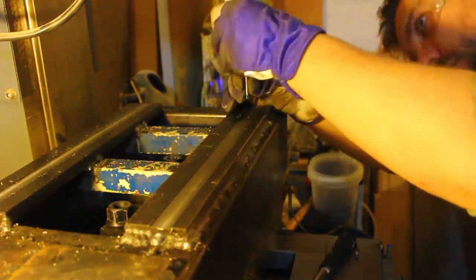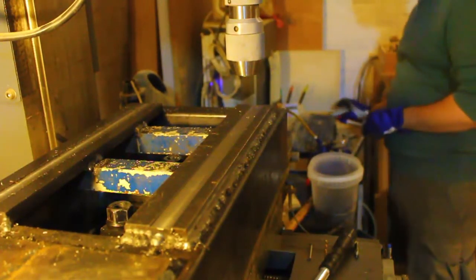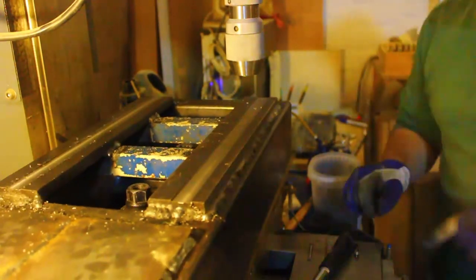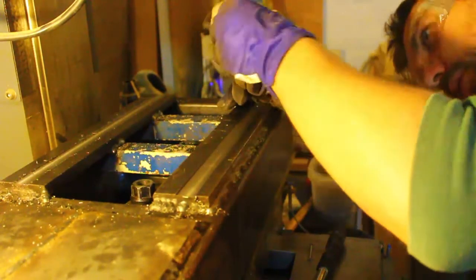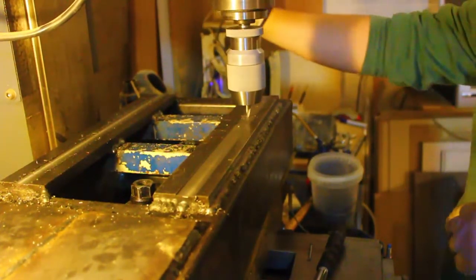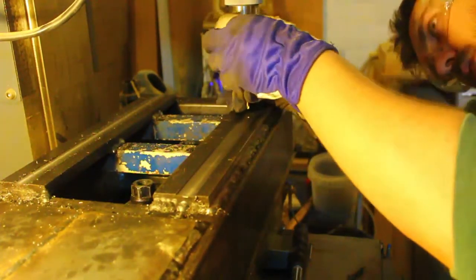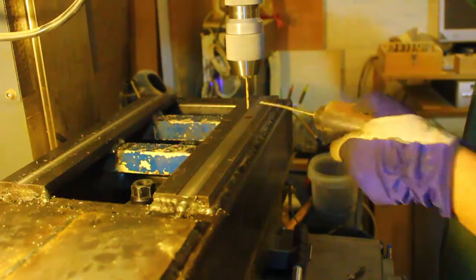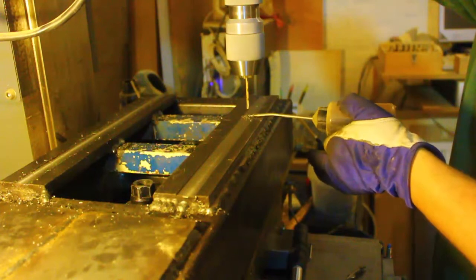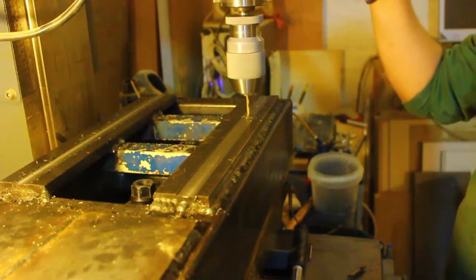Here I'm doing a time-lapse on how I drilled the holes and countersunk them and prepared them for tapping later on. The holes are m4 and first I do a quick spot with a center drill, then a 3.3 millimeter drill, and after drilling I countersink it with a 90 degree countersink.